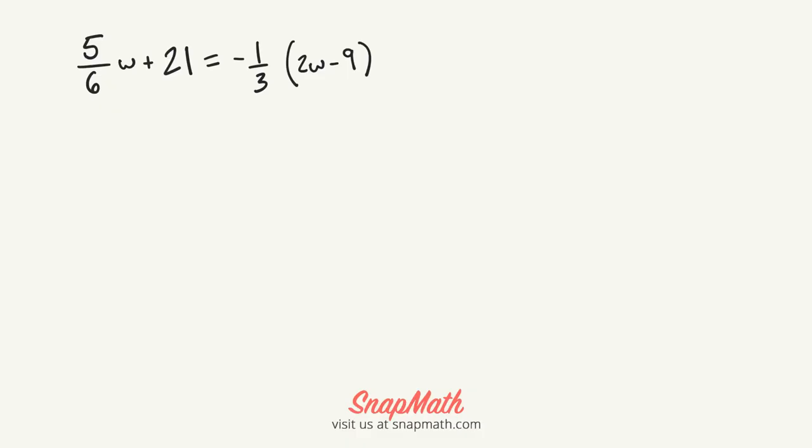This is a multi-step equation problem, and the first thing we want to do is clear the fraction. We need to multiply the entire equation by a common denominator between 6 and 3. The common denominator between 6 and 3 is 6.